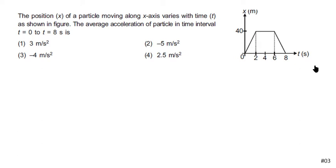Hello everyone, in this problem an x-t graph is given and we have to find the average acceleration. Average acceleration is equal to delta v over delta t. From this graph, we will find the velocity in different intervals.